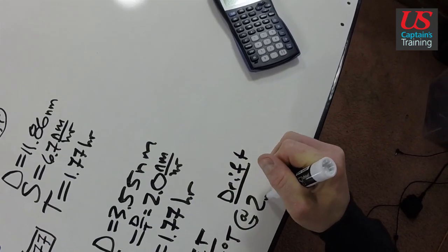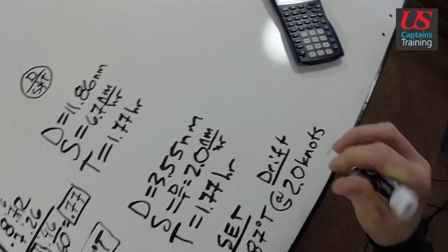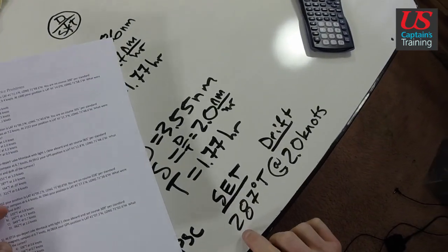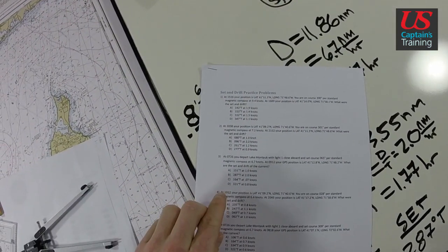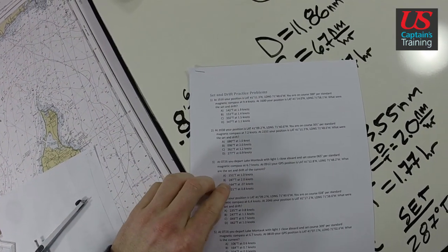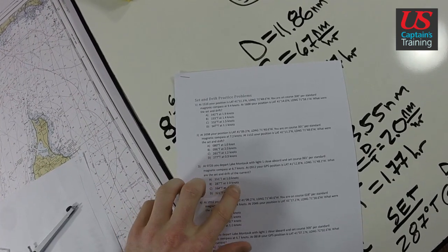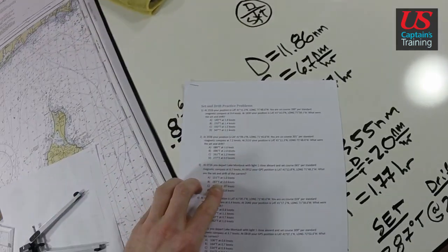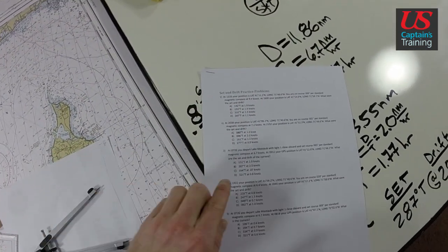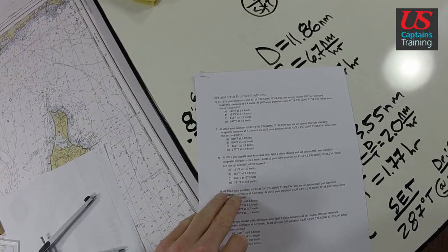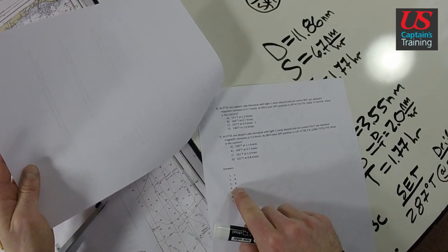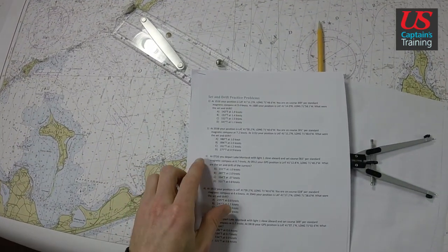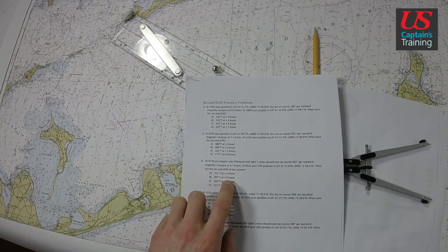Now let's check that out, see if that's available. Now we read the correct side of the compass, 287. So here we are, 287 at 2 knots. Whoa, this one we just nailed it. 287 true at 2 knots. And here we are in our answers, 287 at 2 knots. So number 3 we're saying is B, and we check number 3 is B. So the correct answer to set and drift practice problem 3 is B, 287 true at 2 knots.